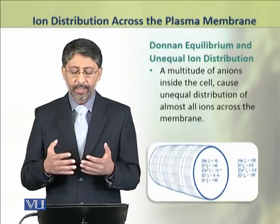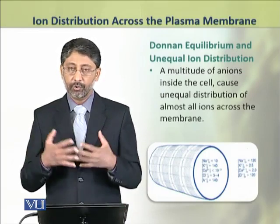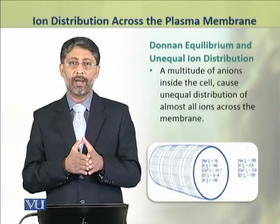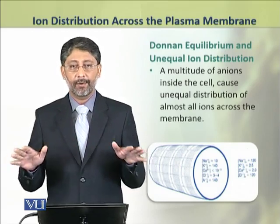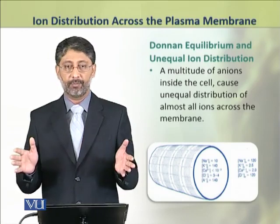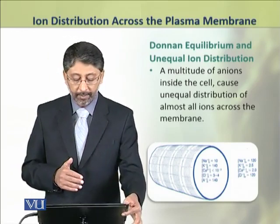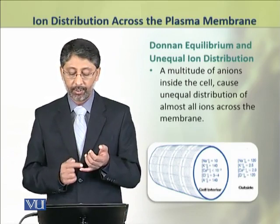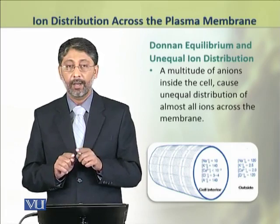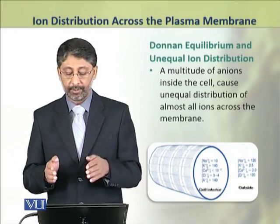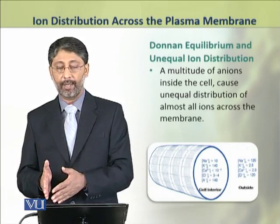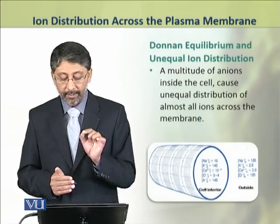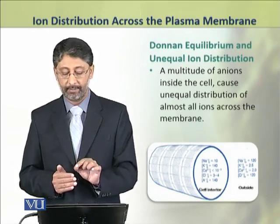Cell ke andar bohot saare anions mojood hone ki wajah se tamam diffusable ions cell me aur cell ki membrane ke across unequally distributed hain. Jaise ke hum is figure me dekh sakte hain ki sari major species of ions — yani sodium, potassium, calcium, aur chloride — unequally distributed hain inside the cell aur outside the cell. Aur yeh sab kuch kis wajah se hai? Because of the presence of an anion A that is highly concentrated inside the cell.